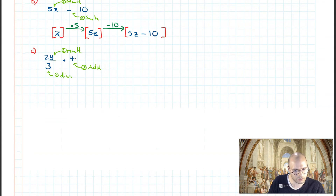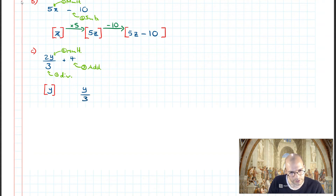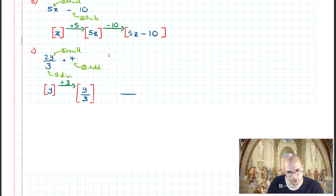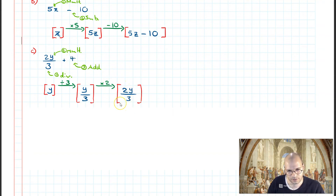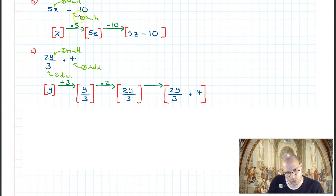Building our flowchart: the unknown is y. y is first going to be divided by 3, so I write y divided by 3. The second operation is multiplication by 2, giving us 2y all over 3. Boxing it up, the operation shown is multiplication by 2. Finally, the third operation is addition of 4, giving us 2y all over 3 plus 4. Boxing this up and drawing the flowchart, I arrive at the final expression. This flowchart shows not only what the expression is, but how it is put together starting from the variable.